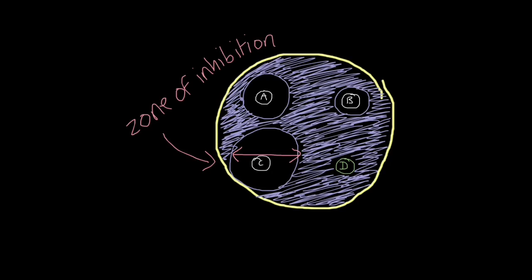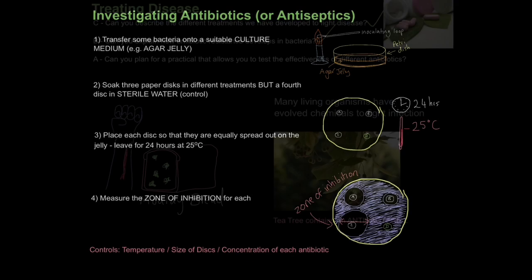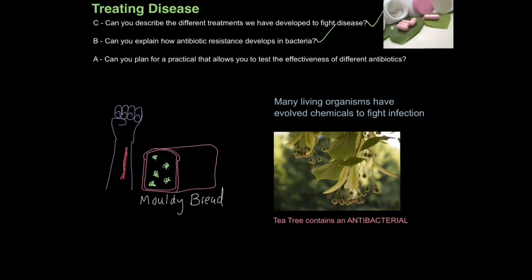You could also be more sophisticated and put graph paper behind the petri dish to count the number of squares and get an exact idea of area, since the circle created might not be symmetrical. And if you're a good scientist, always take into account control variables. In this experiment, to ensure a fair test, you need to control temperature, the size of the discs — so there isn't more antibiotic agent on one than another — and also the same concentration of antibiotic applied to each disc.